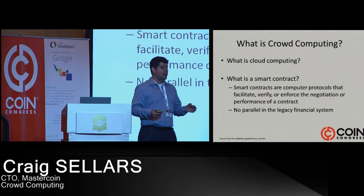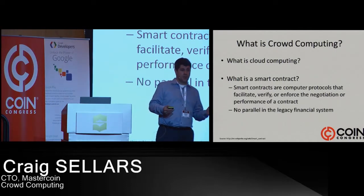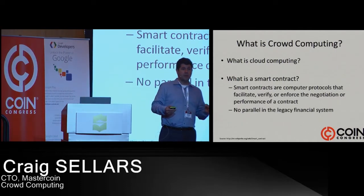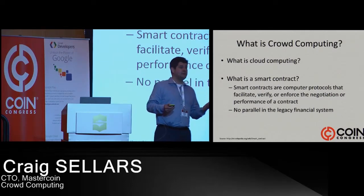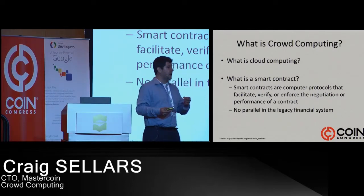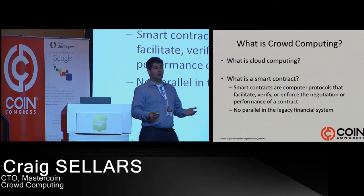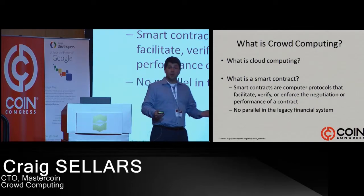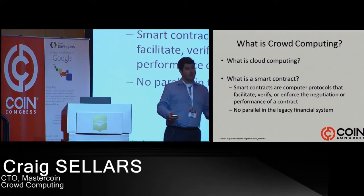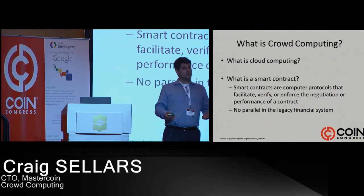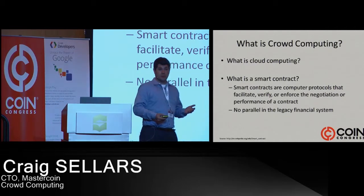So for example, right now, in the absence of smart contracts, we all have agreement upon a definitive location where we want to find information or resources. For example, if you want a prescription, you go to a doctor. If you want a loan, you go to a bank. If you want dollars, you go to the Federal Reserve, etc.